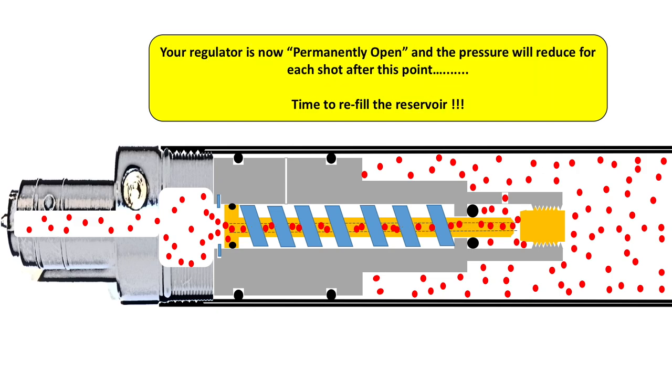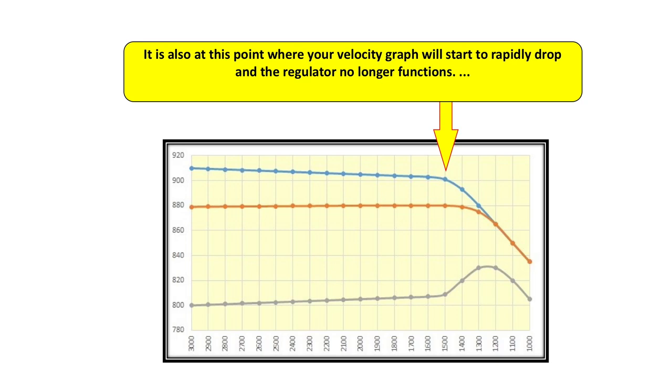With the regulator being permanently open, obviously the pressure on the reservoir and valve assembly side will be equal to each other, and it's now time to refill our reservoir. Remember that once your regulator is permanently open, it doesn't mean the rifle is not going to shoot anymore. It just means that from this point onwards, after every single shot, the overall pressure drops.